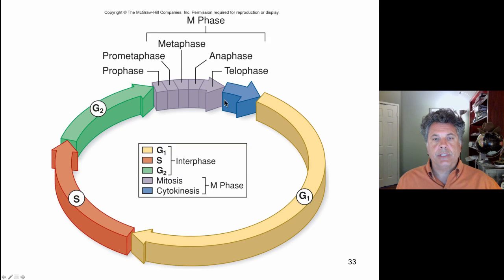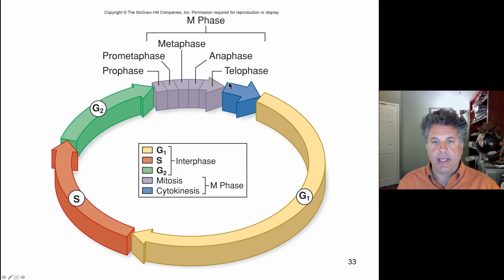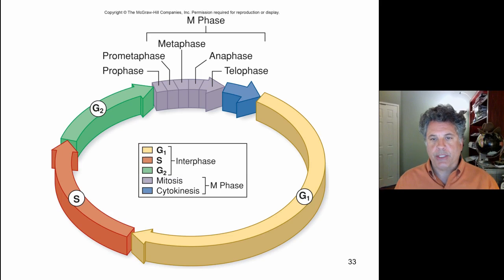Here is mitosis shown in the context of the overall cell cycle. There are five main phases: prophase, prometaphase, metaphase, anaphase, and telophase. We'll go through these in sequence and talk about the main features of chromosome behavior during each phase. The cells divide during cytokinesis, in which the new daughter cells form by separation of the cytoplasm and contents into two daughter cells.